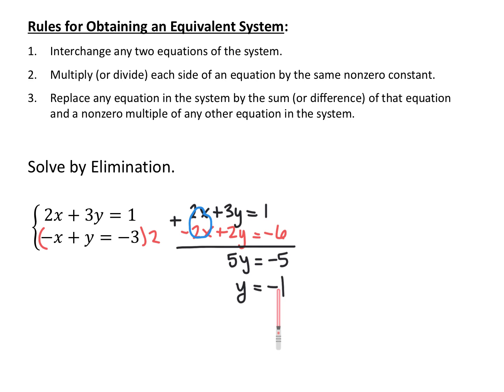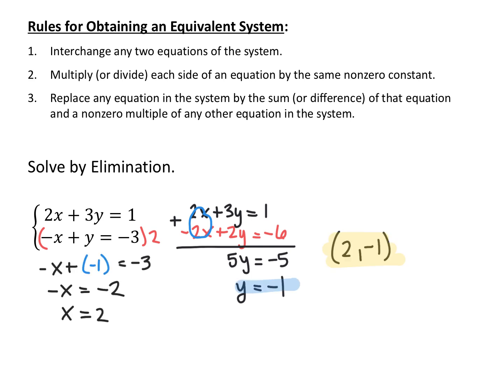Now I can substitute y equals negative 1 into either of the two original equations and solve for my x coordinate. I plugged negative 1 into the second equation because it had no coefficients, so I get negative x plus negative 1 equals negative 3, which gives negative x equals negative 2, or x equals 2. So my solution is the coordinate point 2, negative 1.